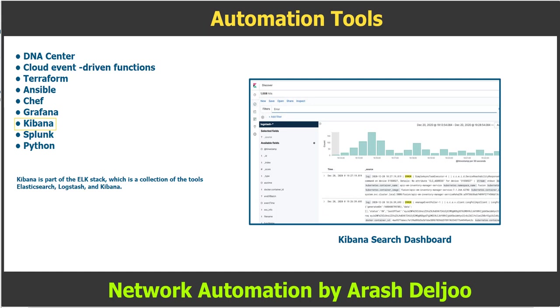A fourth common component is Beats, which is a data shipper. Beats provides a way of exporting data from any type of system to Logstash using an agent. Agents in the infrastructure capture data and ship it to Logstash.